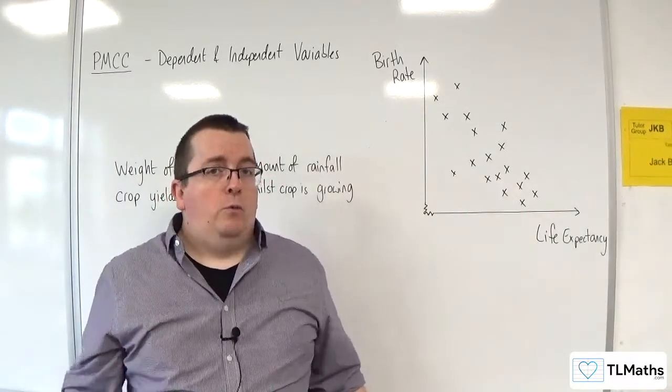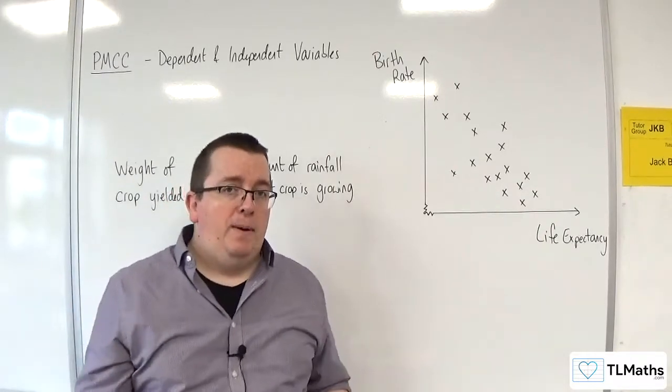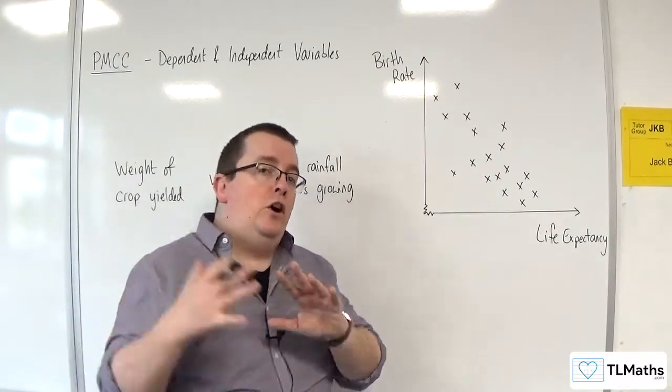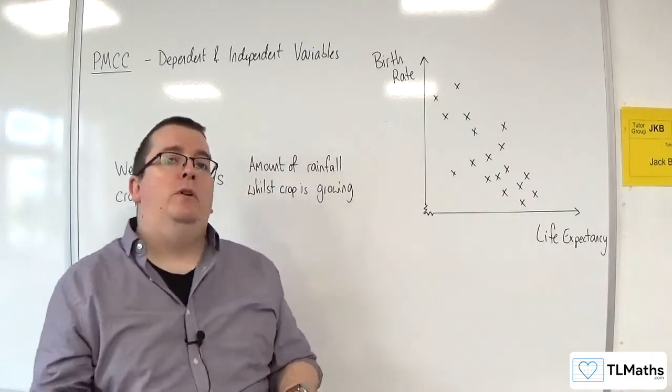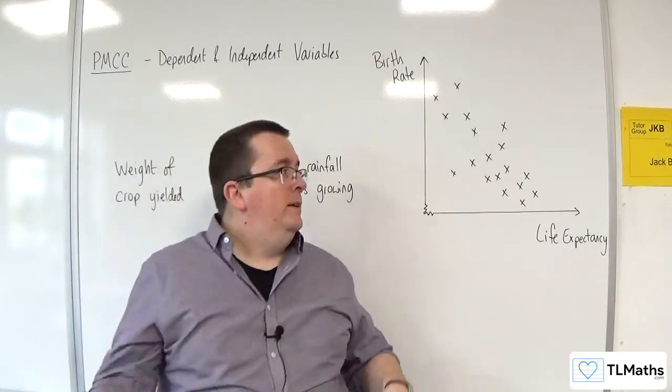Well, traditionally, what we do is we plot the independent variable along the horizontal axis and the dependent variable on the vertical axis.